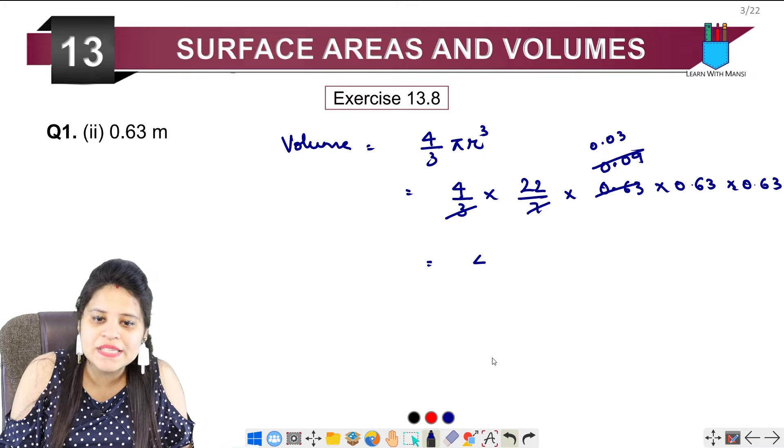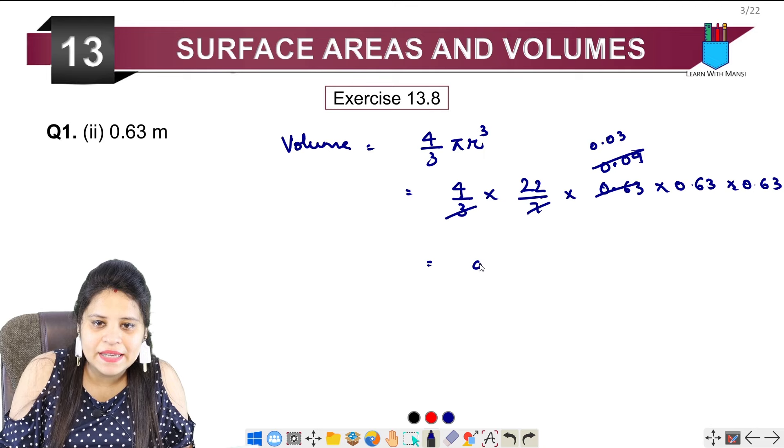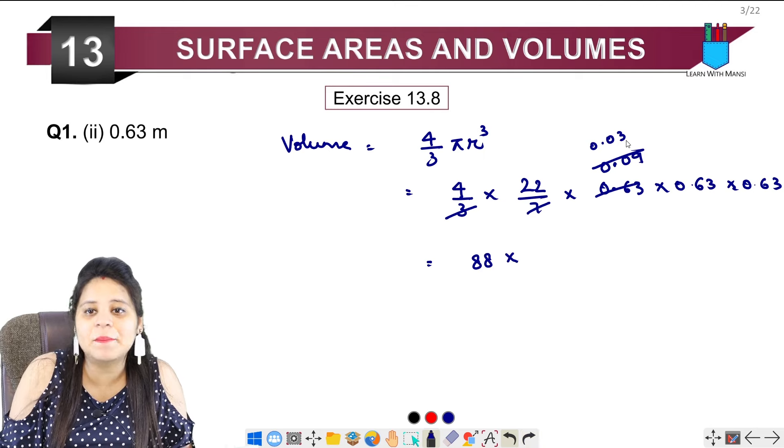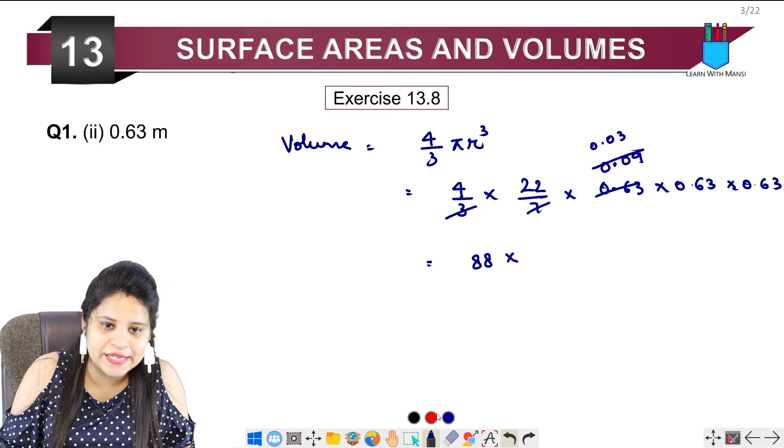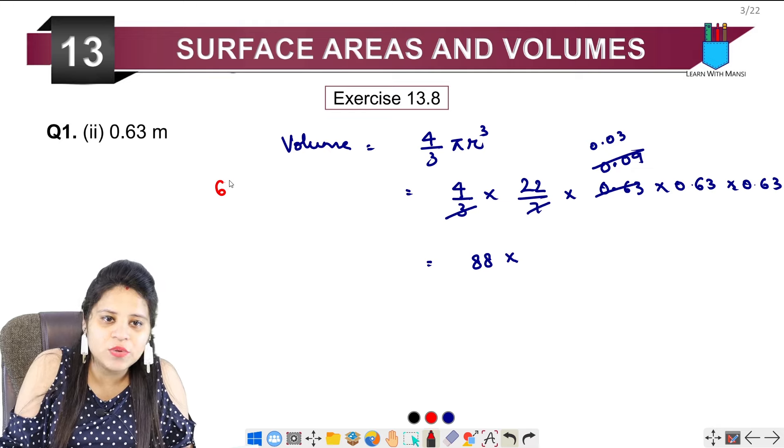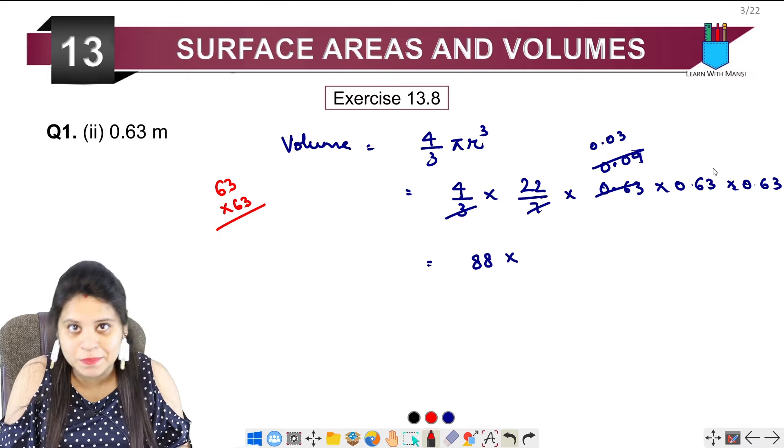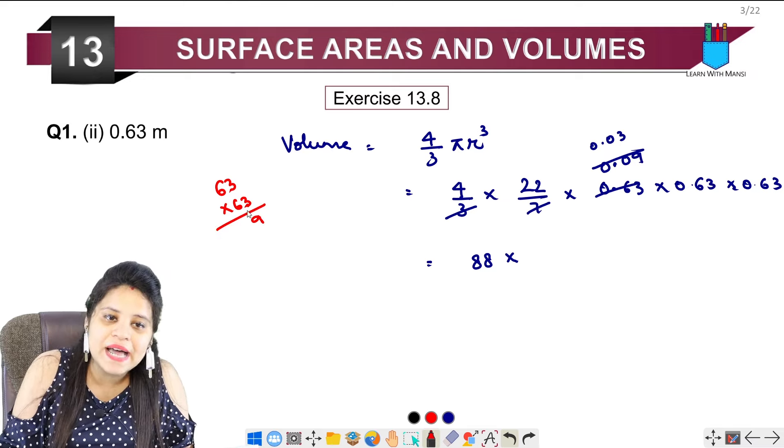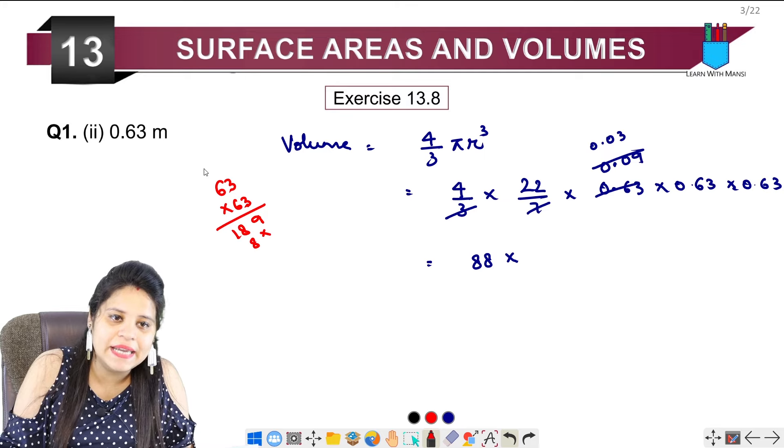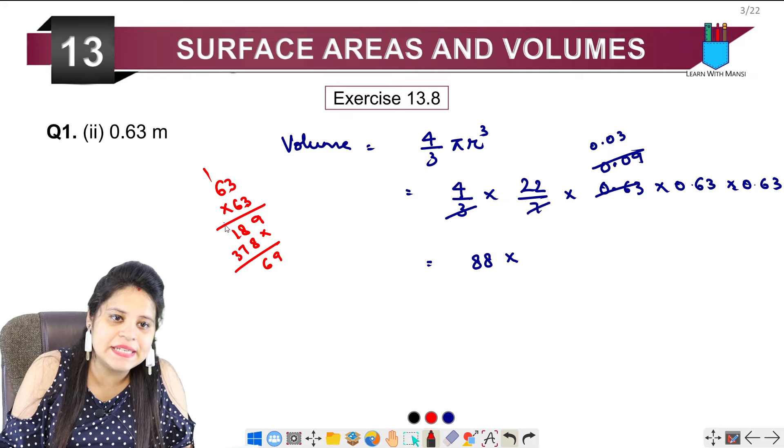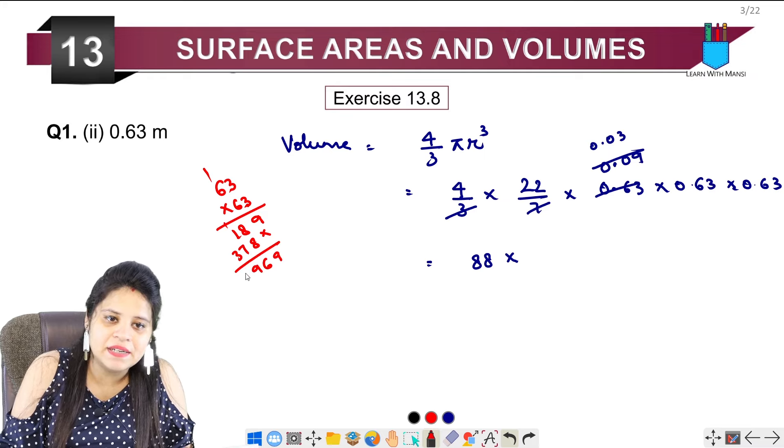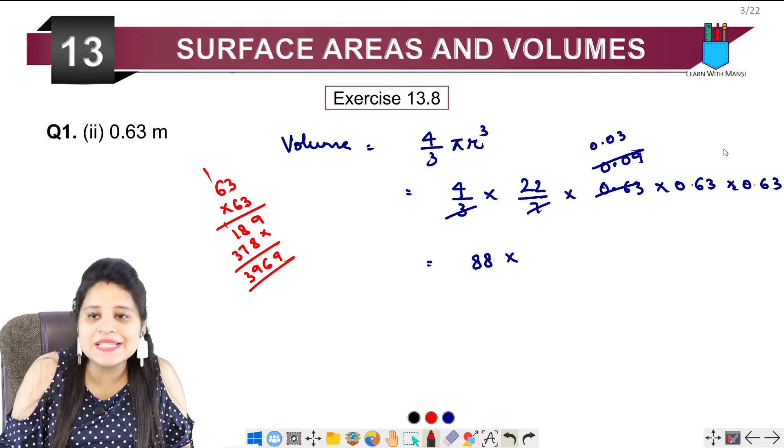Yah aagaya 22 into 4 is 88 multiplied by, ab yahan par pehle 63 aur 63 ho kar lete hain, phir usko 3 se kar lengi. 63 into 63, hum yah decimal baad mein lagayenge. 3 threes are 9, 6 threes are 18. Again 6 threes are 18, 6 sixes 36, 37. So we have 9, 8, 8, 16. Then 7, 8, 9, 3. So yah aagaya 3969.